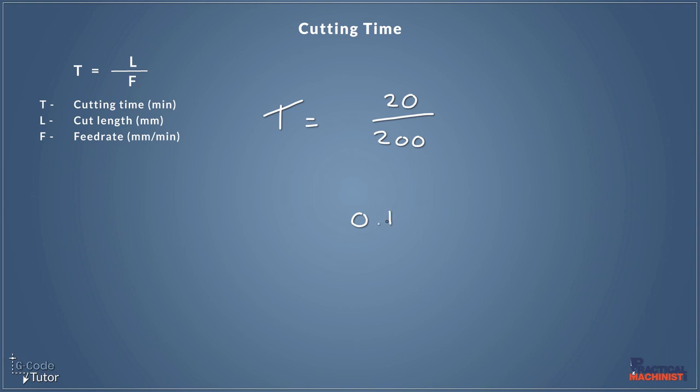Now that's in minutes. So it'd be 0.1 of a minute that would take us to cut this length. Now if we wish to convert that into seconds, we would just times it by 60. So 0.1 times 60 would equal six seconds. So our first answer, the one this equation kicks out, this would give us it in minutes. And then we would just times it by 60 to give us an answer in seconds.